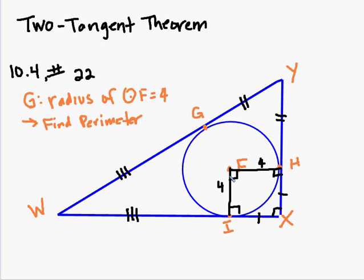And now I've created a square. The sides opposite a parallelogram are going to be the same. So HX is 4 and IX is 4.